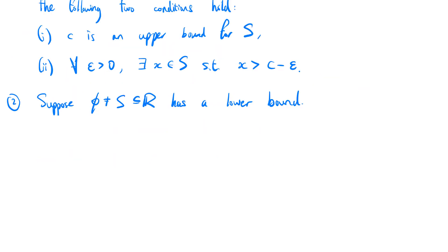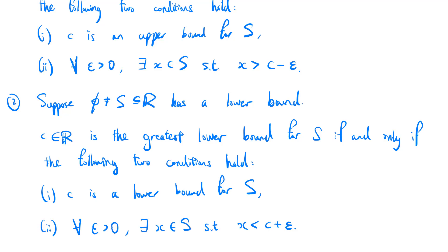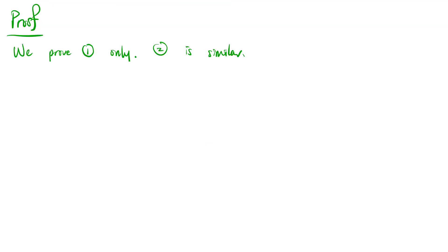Similarly, suppose s is a non-empty subset of the real numbers and it has a lower bound. Real number c is the greatest lower bound for s if and only if: (1) c is a lower bound for s, and (2) for all epsilon greater than 0, there exists x in s such that x is less than c plus epsilon. For the proof, we will only prove the first point, because the second point is very similar.